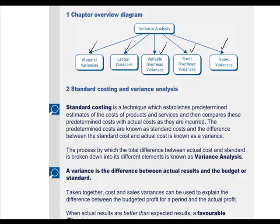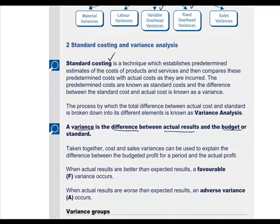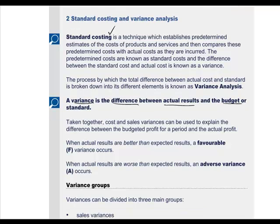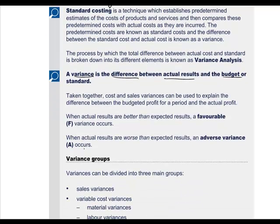In order to do variance analysis, we need to have an idea of what standard costs are, and we'll see them in specific examples. The variance is quantifying the difference between our actual results and what we would budget according to standards. We can have favorable variances indicated by the letter F, or adverse variances indicated by the letter A.